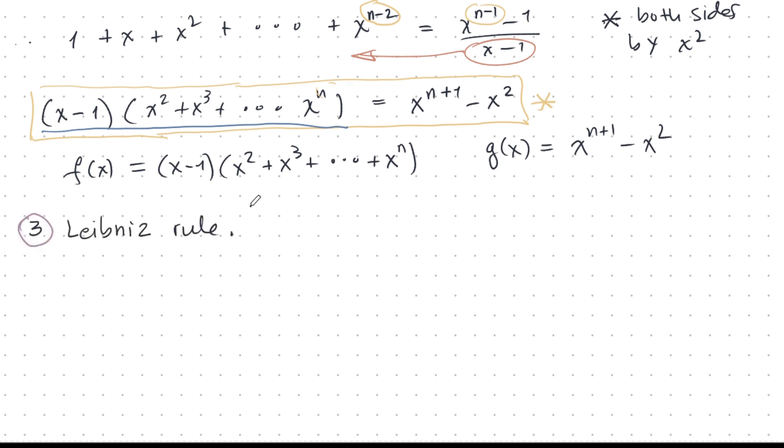Now it's time to apply Leibniz rule. So we want to find the third derivative of f. Well, f is a product of two functions, u and v. u is x minus 1, v is the big sum. And we can use Leibniz's generalized rule now. And Leibniz's generalized rule says this. It's kind of like the binomial theorem.